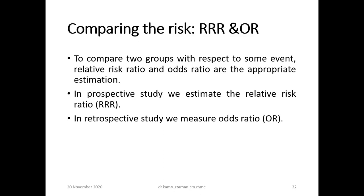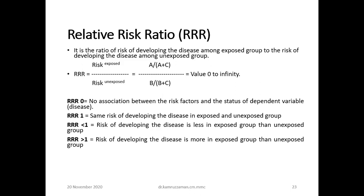The relative risk ratio is the ratio of the risk of developing the disease among the exposed group to the risk of developing the disease among the unexposed group. It ranges from zero to infinity. If the relative risk ratio is zero, there is no association between the risk factor and the status of the dependent variable.